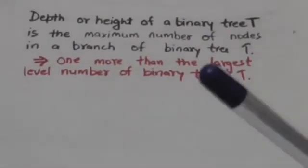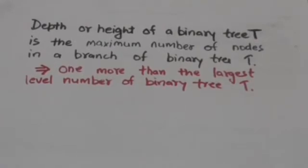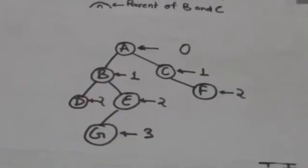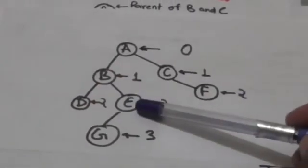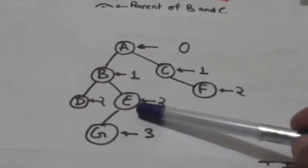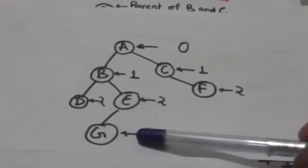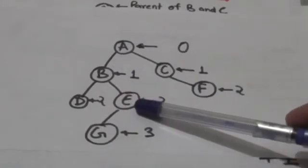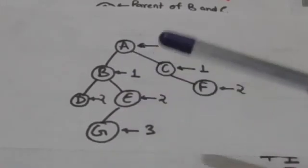The depth or height of a binary tree T is 1 more than the largest level number of binary tree T. The largest level number of this binary tree T is 3, so its depth or height is 4.